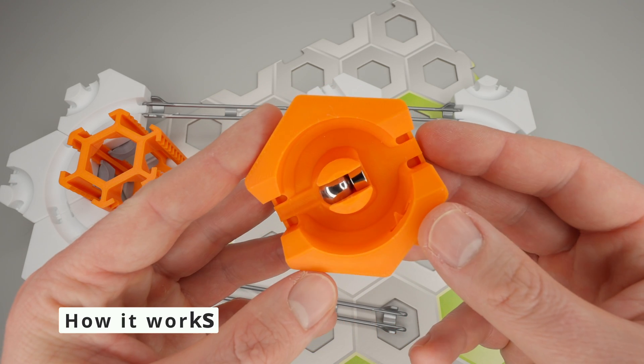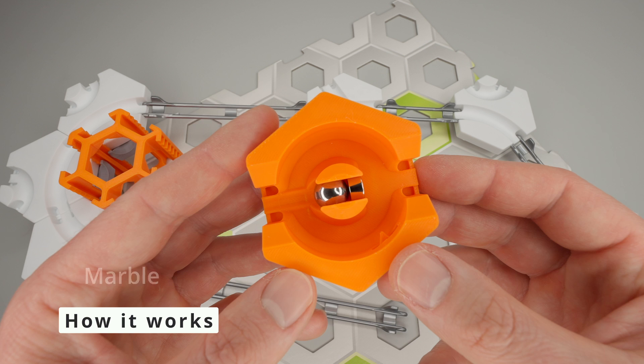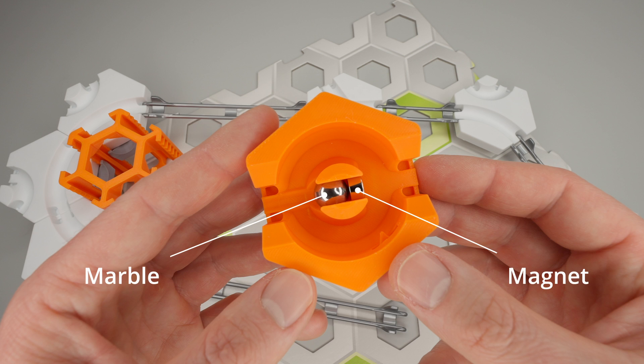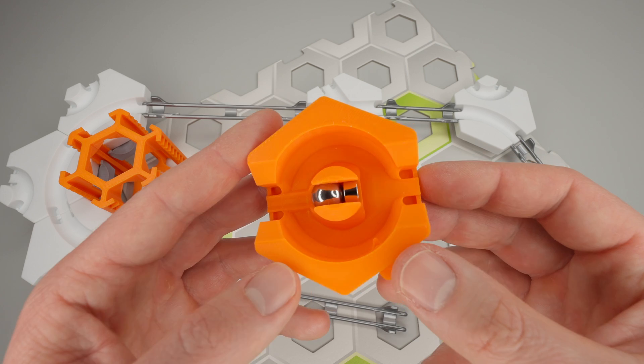Let's begin with a cutout model from the base. It's the classic Gauss cannon featuring a marble and a magnet that must be in contact to transfer the impulse from the incoming ball.